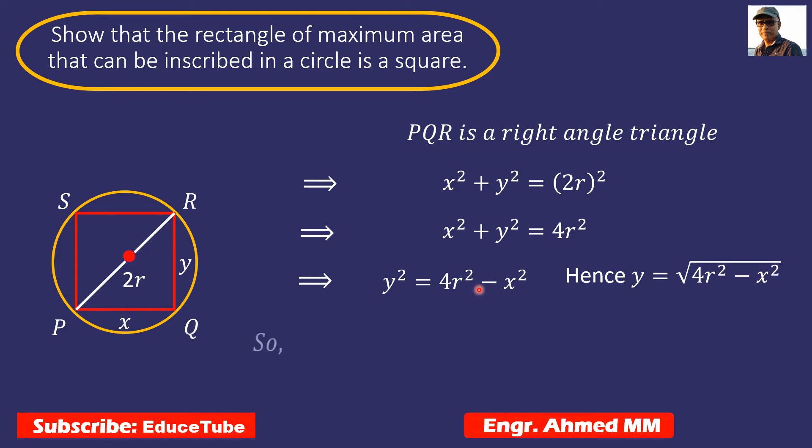Now let's see what will be the area of PQRS. We know it will be x multiplied by y, so A = x√(4r² - x²). So we got this area.